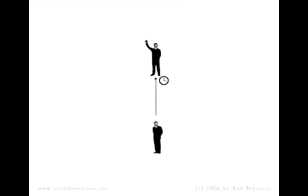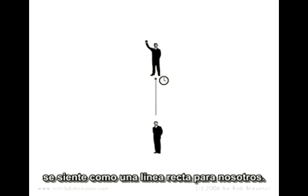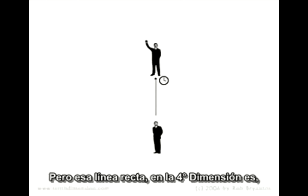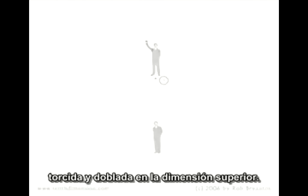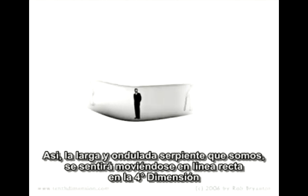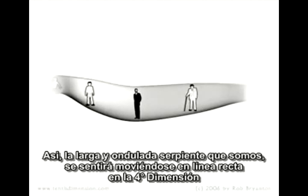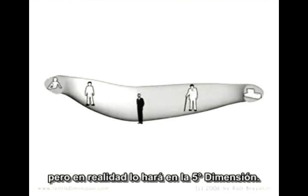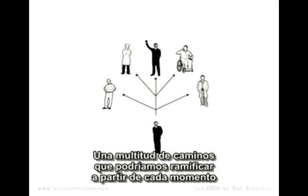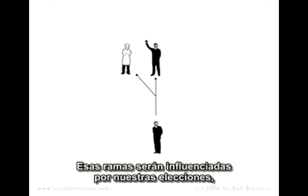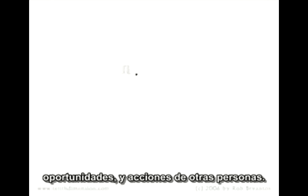The fourth dimension — time — feels like a straight line to us, moving from the past to the future. But that straight line in the fourth dimension is, like the Möbius strip, actually twisting and turning in the dimension above. So the long undulating snake that is us will feel like it is moving in a straight line in the fourth dimension, but there will actually be, in the fifth dimension, a multitude of paths that we could branch to at any given moment. Those branches will be influenced by our own choice, chance, and the actions of others.